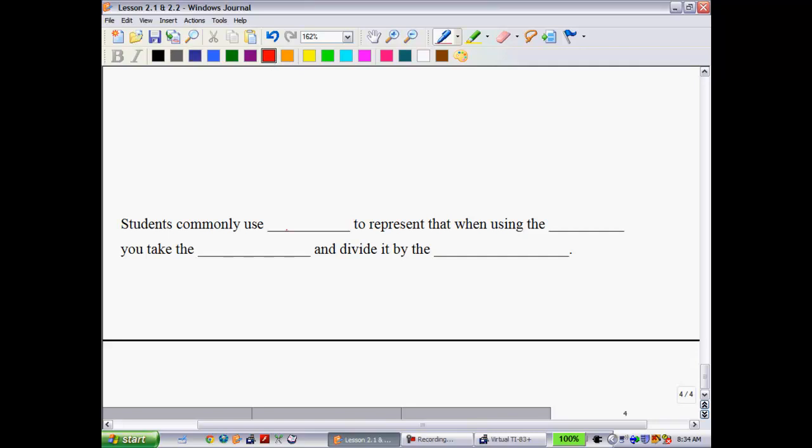So one thing I want to summarize here down at the bottom is that students commonly use the acronym TOA to represent that when using the tangent ratio, you take the opposite and divide by the adjacent. So we're going to start talking about SOHCAHTOA in this unit. But so far, all we've talked about is this TOA. All that means is that when you're dealing with the tangent ratio, you need to remember that we have the opposite over the adjacent.